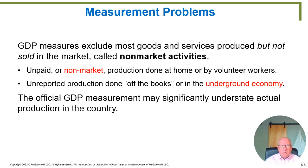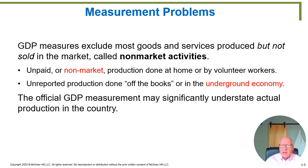One last measurement problem: GDP measures exclude most goods and services produced but not sold in a market — these are referred to as non-market activities. Unpaid or non-market production done at home or by volunteer workers doesn't get counted in GDP statistics. For example, if you live in a relatively poor country where a large number of people are farmers growing their own vegetables for themselves and not selling them, is the government counting all that production? Of course not — if it didn't get to a market, it's not going to get counted.